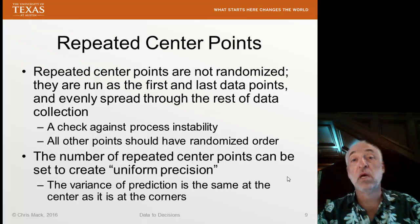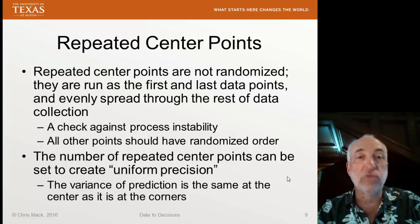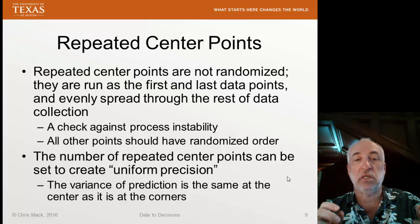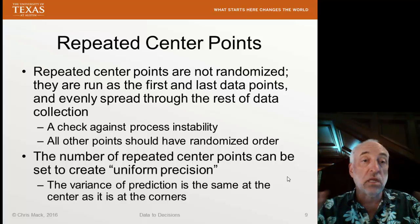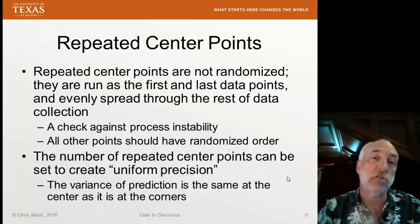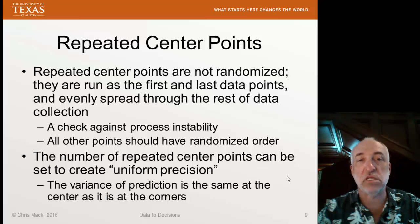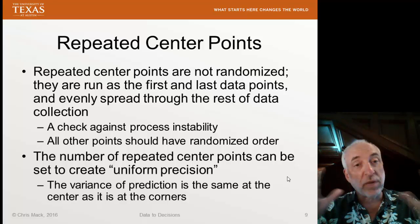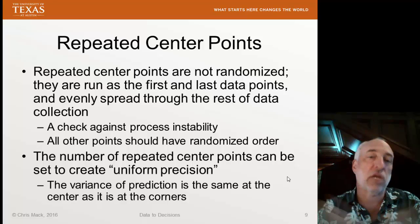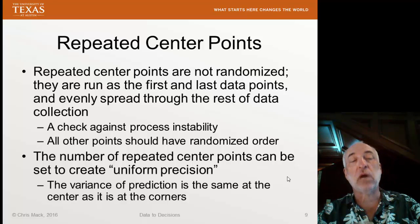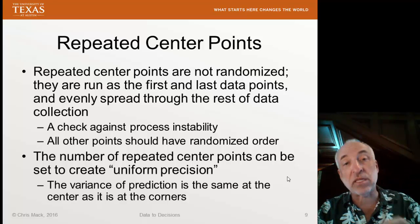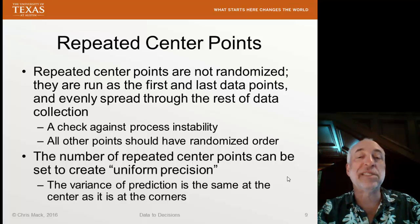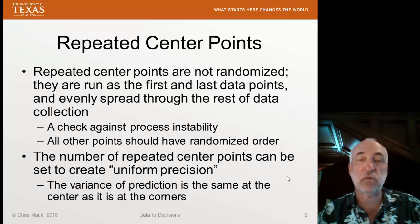How many repeated center points do we measure? There's a specific reason we pick a certain number: to create uniform precision. The uncertainty of prediction is a function of how far you are from the center, because outer points have more leverage than the central point. We can create more uniform precision by increasing the number of measurements of the center point until the variance of prediction is the same at the center as it is at the corners. This desire for uniform precision guides us in deciding how many center points to measure.